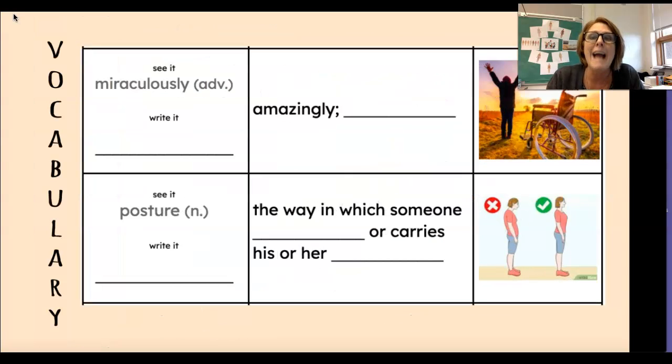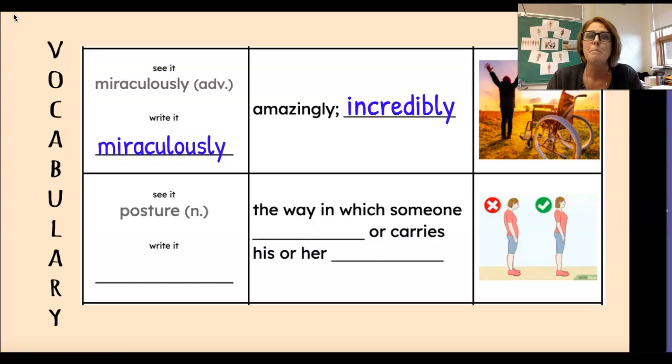Next is miraculously. That's a big word. Say it with me. Miraculously. Let's do that again. Miraculously. That's an adverb. An adverb is like an adjective, but it describes words. It describes actions. Write it on the line. And it means amazingly, incredibly. Those are synonyms for the word miraculously.